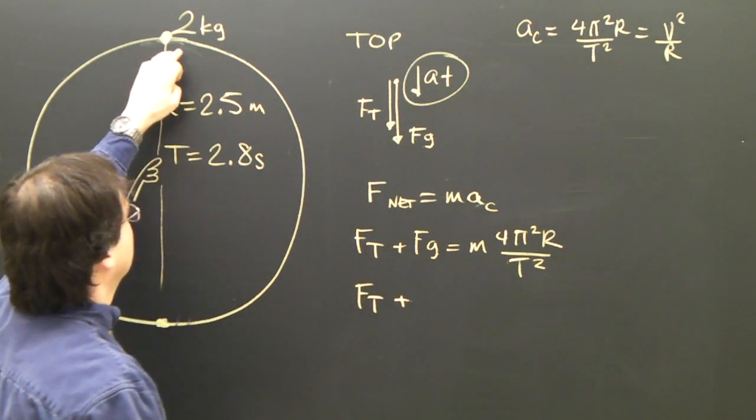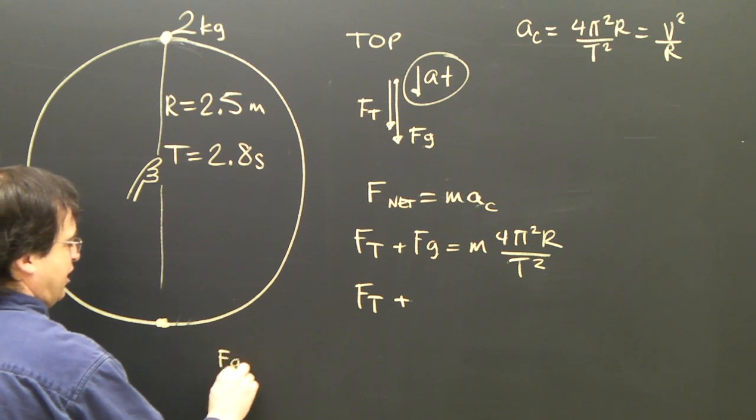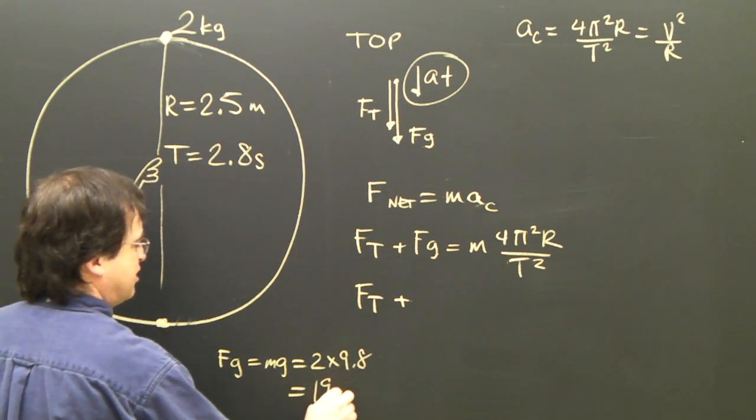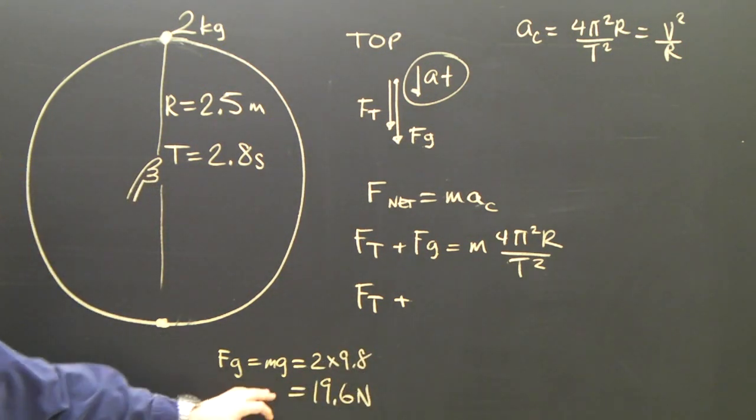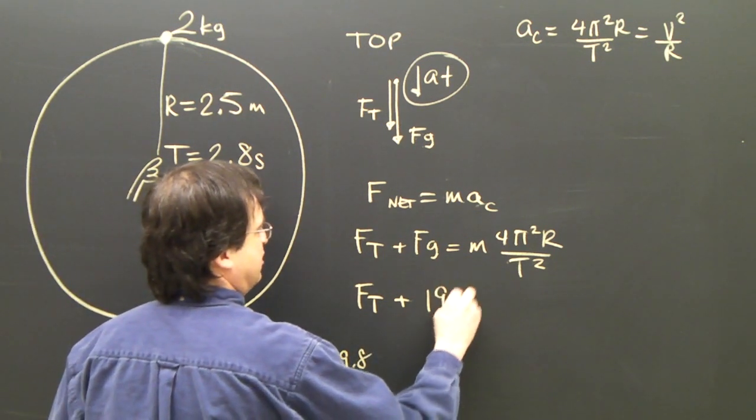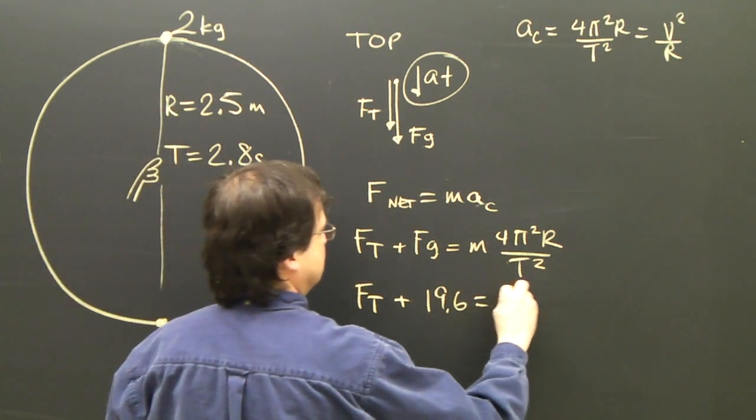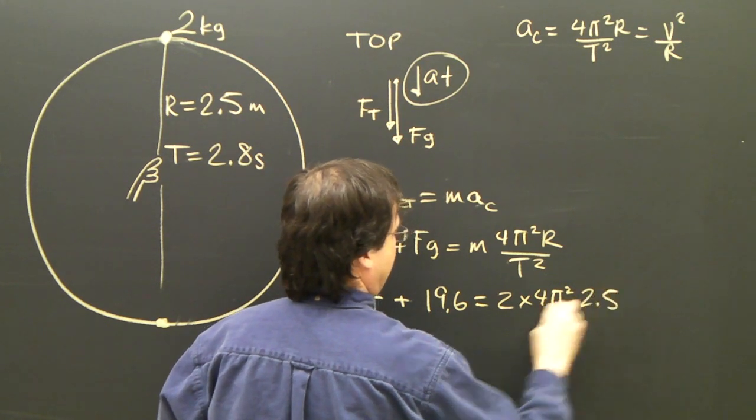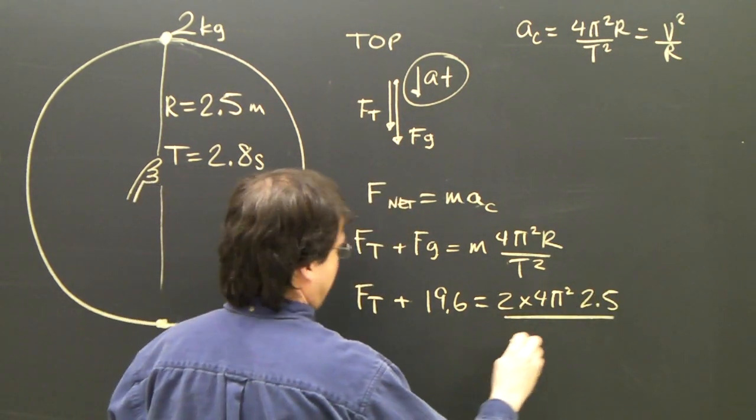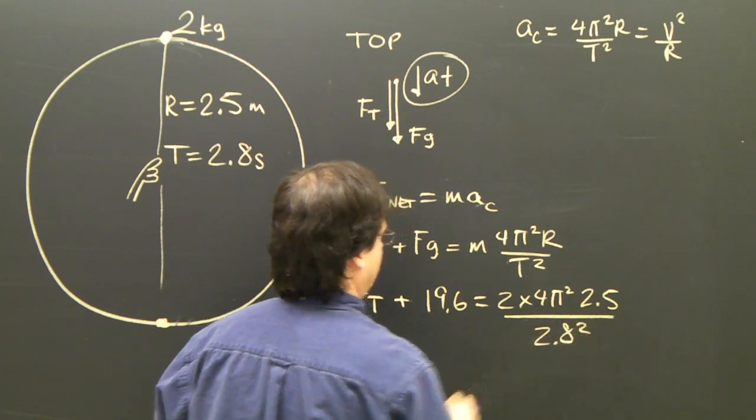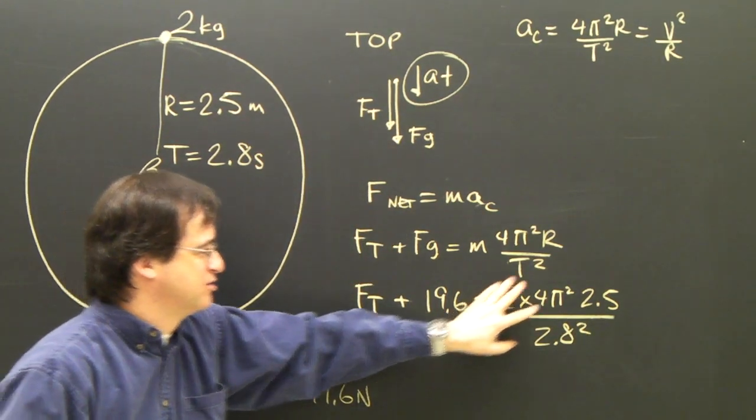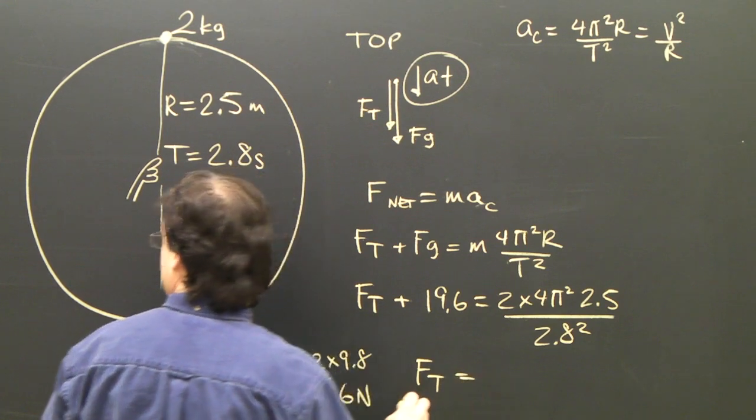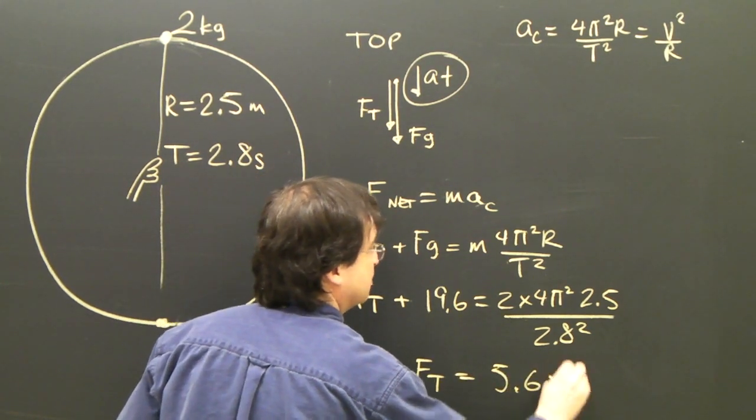ft plus fg, on two kilograms, let's figure out fg. Fg equals mg equals 2 times 9.8 equals 19.6 newtons. So I know the gravity is 19.6 newtons. The mass is 2 times 4 pi squared, the radius is 2.5 divided by the period, 2.8 squared. So I figure all this out, I solve for this, I bring the 19.6 over to this side, and I get that ft equals 5.6 newtons.